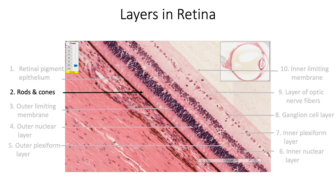Rods and cones are radially oriented structures arranged in a palisade manner, like wooden boards in a picket fence. There are about 120 million rods versus only about 7 million cones. Rods are more peripherally located, more light sensitive, and their image is grey-toned. Cones are more centrally located, less light sensitive, and different cones are sensitive to red, green, and blue light in the visual spectrum.